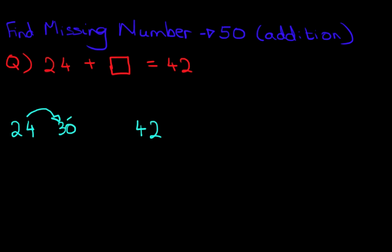And then from 30, we get to 40. And then from 40, we get to 42. So there are three steps in this process.